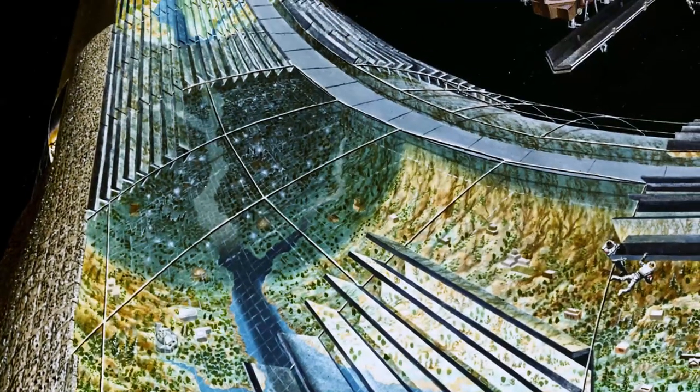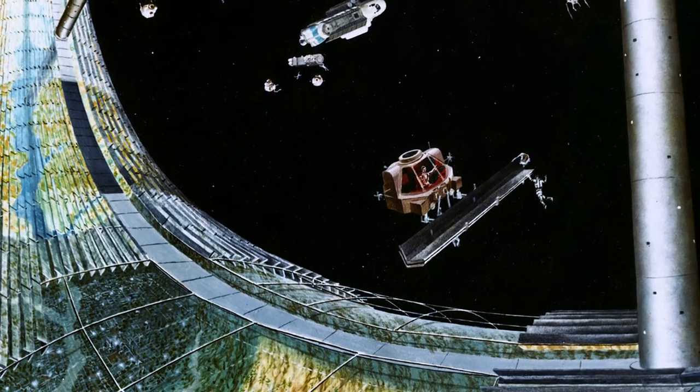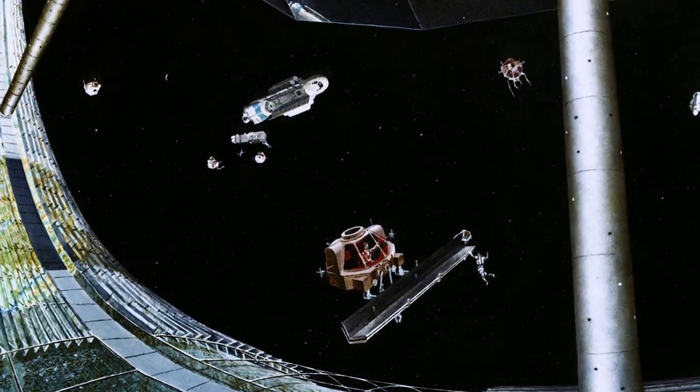These habitats, along with thin mirrors and solar panels to help supply them with light and electricity, tend to be considered the default constituents of a Dyson Sphere.